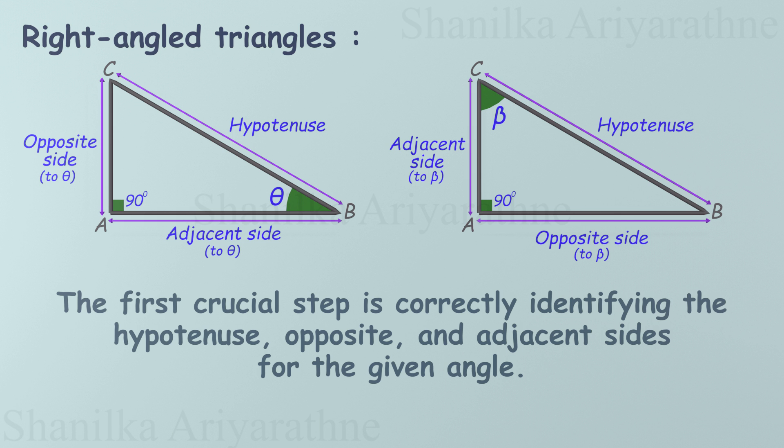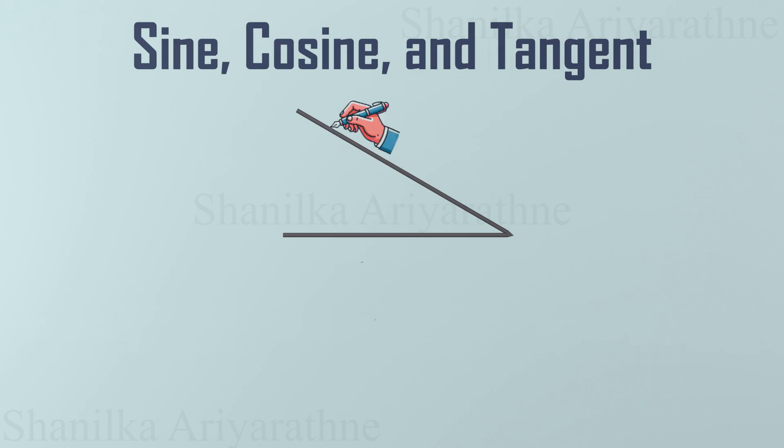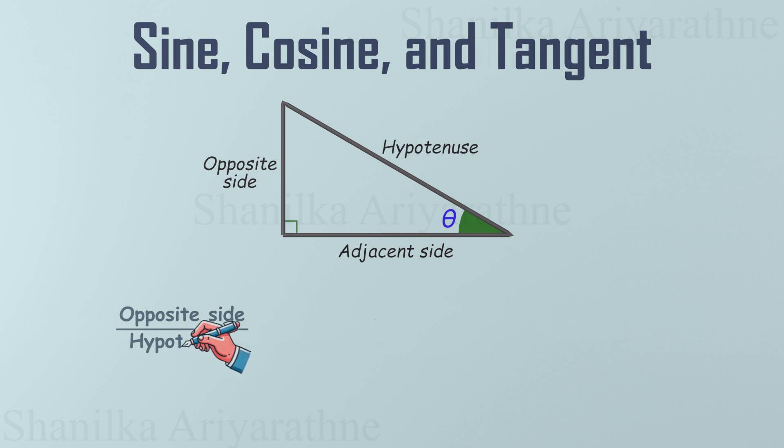Here's where things get exciting—sine, cosine, and tangent. These three are the superheroes of trigonometry. For any chosen angle in a right-angled triangle, the opposite side divided by the hypotenuse is called the sine of that angle.